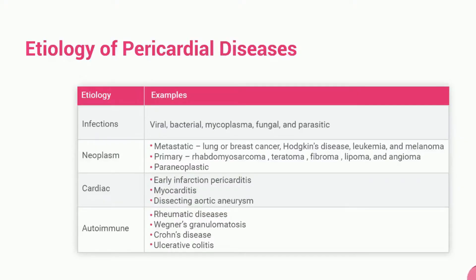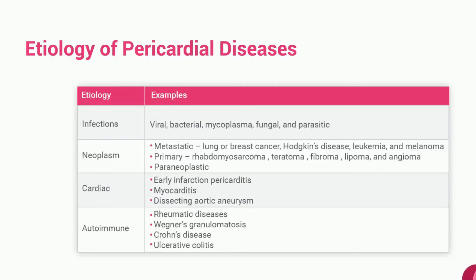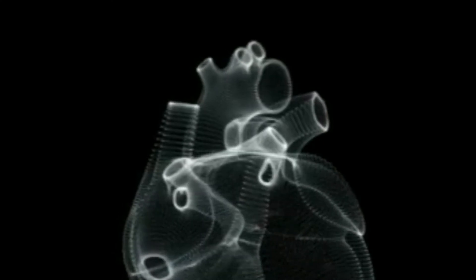Let us now cover the etiology of pericardial diseases. The etiology includes infections, neoplasm, cardiac, and autoimmune causes. Infections include viral, bacterial, mycoplasma, fungal, and parasitic. Neoplasm causes include metastatic cancers like lung or breast cancer, Hodgkin's disease, leukemia, and melanoma; primary causes include rhabdomyosarcoma, teratoma, fibroma, lipoma, and angioma. Cardiac causes include early infarction pericarditis, myocarditis, and dissecting aortic aneurysm. Autoimmune causes include rheumatic diseases, Wegener's granulomatosis, Crohn's disease, and ulcerative colitis.